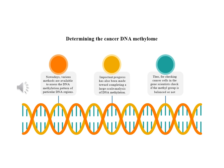DNA is first denatured, made single-stranded, and then treated with sodium bisulfate. Methylation-sensitive restriction enzymes are used to analyze the methylation status of cytosine residues in CpG sequences. Chromatin immunoprecipitation, short ChIP, is also used to analyze the methylation status of cytosine residues in CpG sequences.